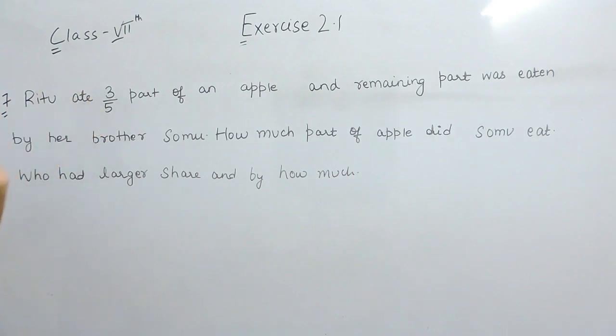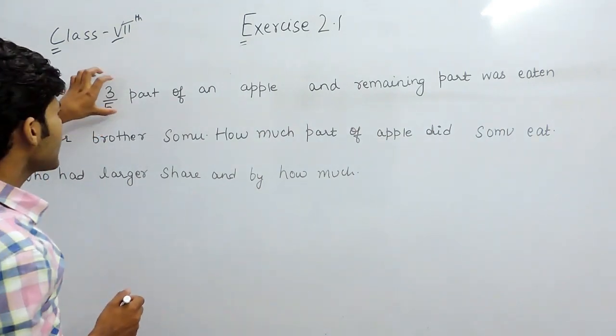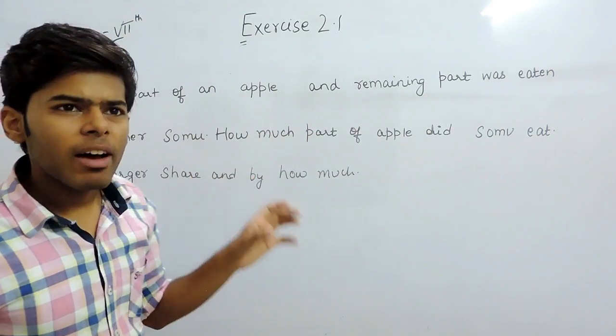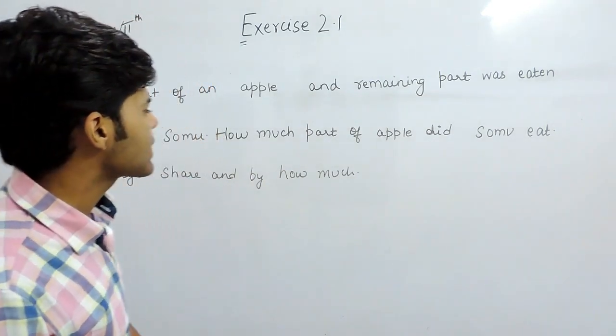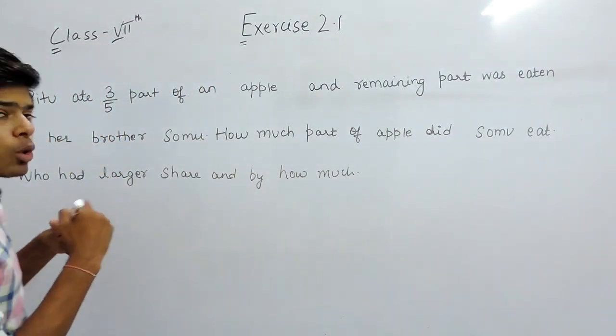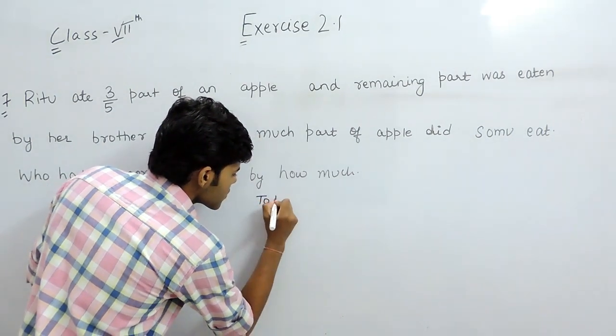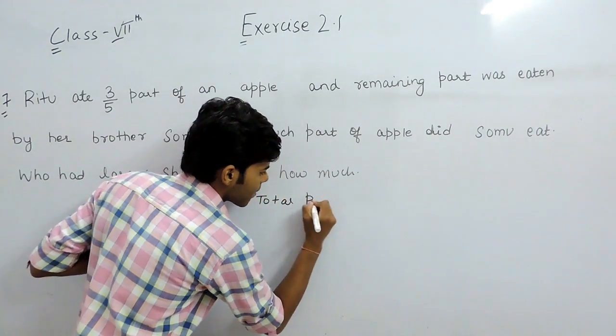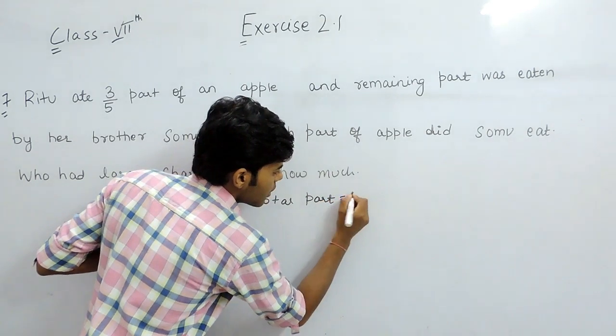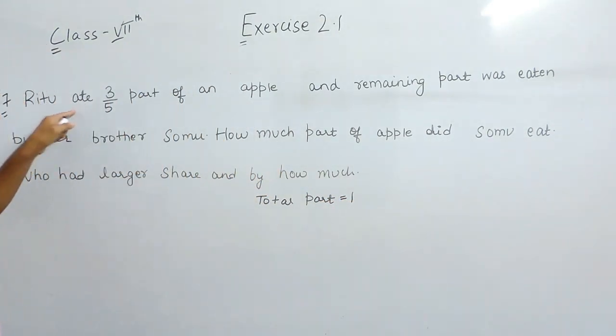Always remember when this type of question is given, where some part is given, supposedly 1 by 4, 2 by 3, 3 by 6 or this type, then the total part will be 1. Total part will always be 1.